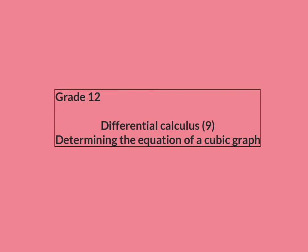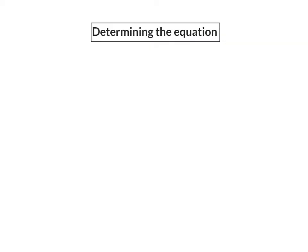In this lesson we're going to look at how to determine the equation of a cubic graph. In the previous lesson we learned that there are mainly two different forms for a cubic graph. The first is when the graph has two stationary points and the second is if it has one stationary inflection point.